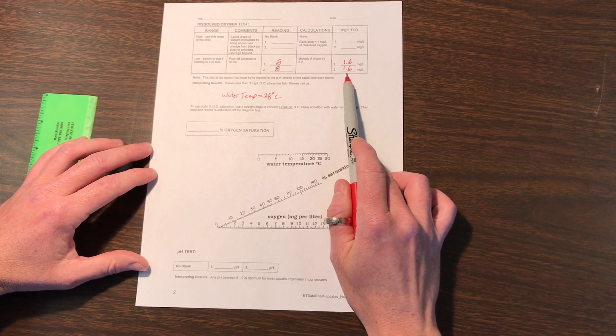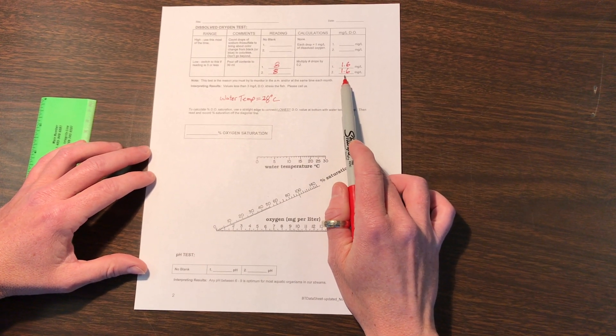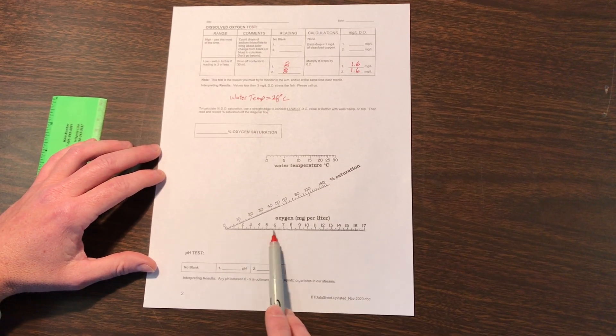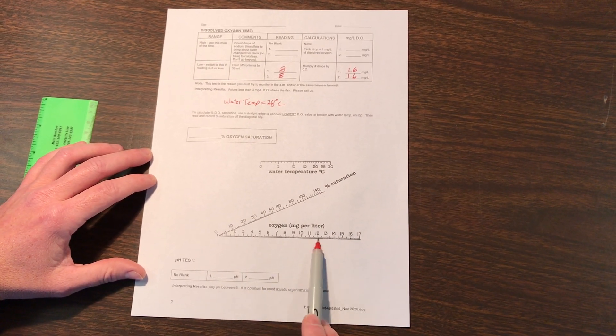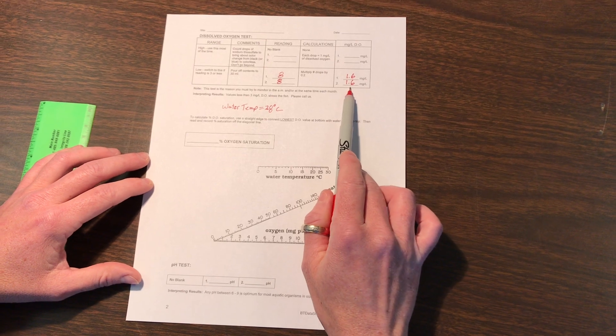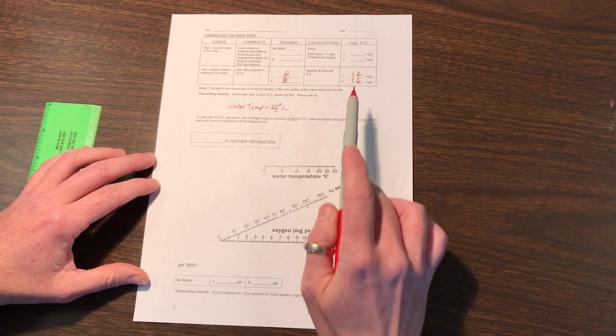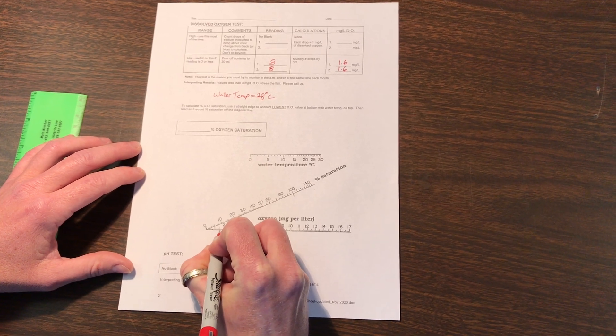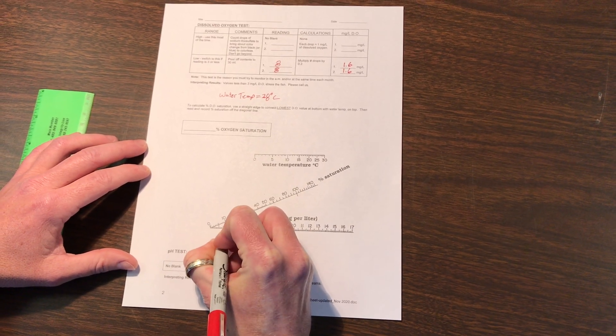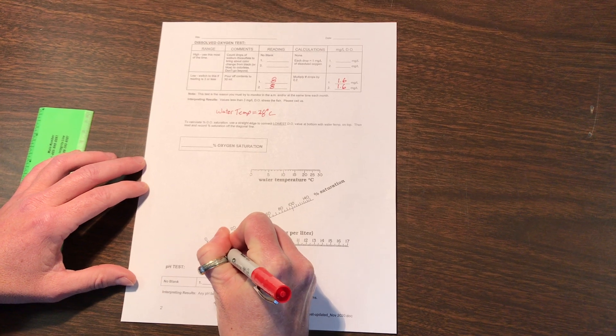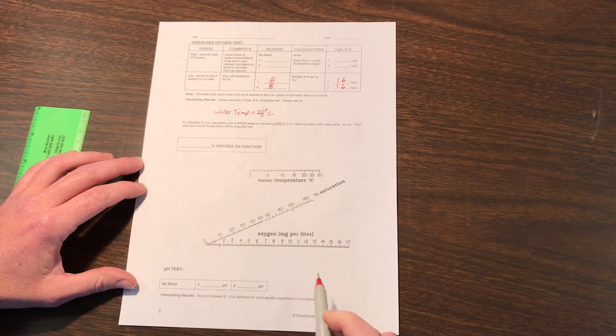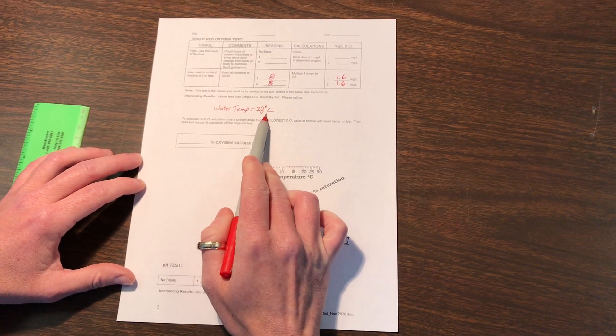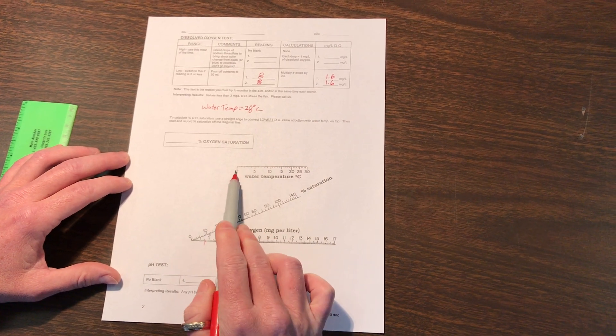We are going to mark on our bottom axis—this is the oxygen line, the milligrams per liter—we'll make a mark at 1.6 mg per liter of oxygen, roughly about here. Water temperature is 28 degrees Celsius, that is the top axis. 28 degrees Celsius is right there.